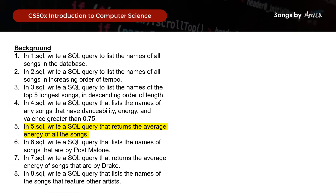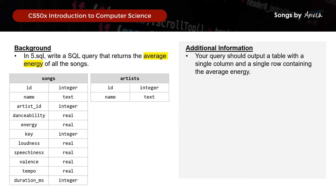Next, we want to return the average energy of all songs. The additional information given is that we should output a table with a single column and a single row that lists the average energy — just a single average number. To find the average energy of all the songs, we will use the AVG function: SELECT AVG(energy) FROM songs. And that will be the fifth query.